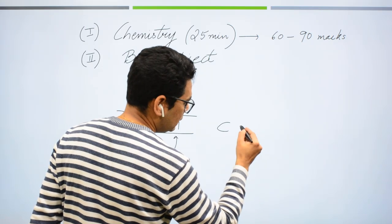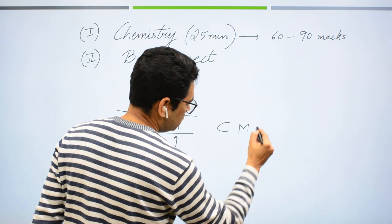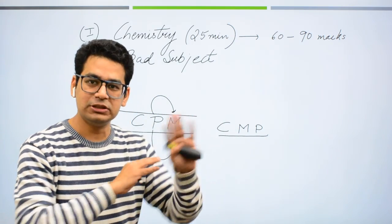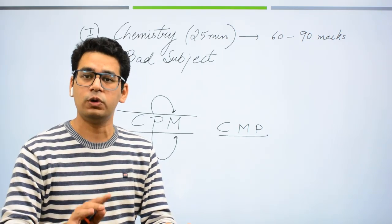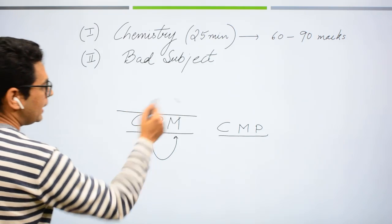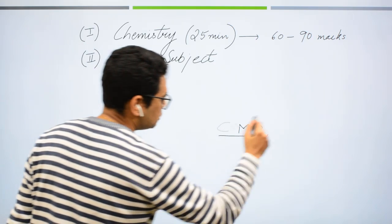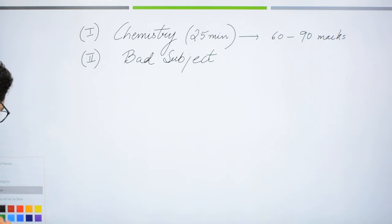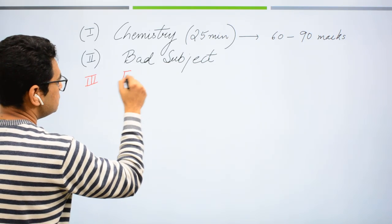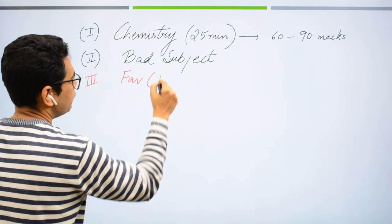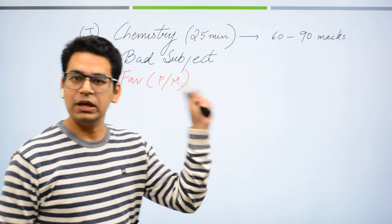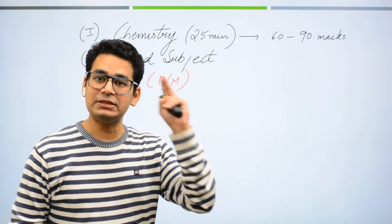For example, kai logo ka ho sakta hai physics is better than their maths, so aap maths ko beech mein daal sakte hain. And again I am saying, zaroori nahi hai aapko yahi order follow karna hai. Aap apni marzi se 6 combinations bana ke kuch bhi order follow kar sakte ho. Bad subject ko mein kyun rakhta tha beech mein, kyunki woh mera ko ek confidence level hamesha berkarar rakhta tha dimag mein ki mera jo third topic hai which is my favorite subject, in physics or maths, out of physics or maths, woh mein hamesha apna third attempt bana ke rakhta tha, jisse motivation advantage mil gaye hai.